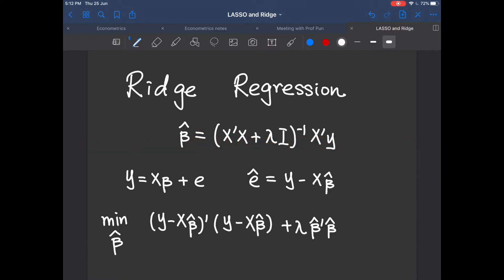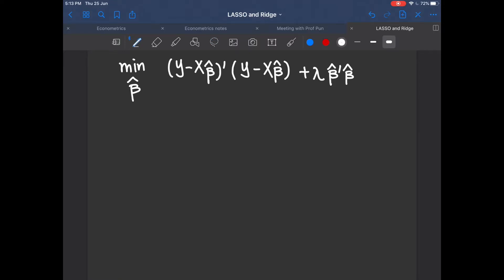Now let's get back to the objective function of the ridge regression. So in order to minimize this objective function, we need to differentiate this whole expression with respect to beta hat.